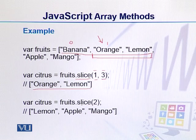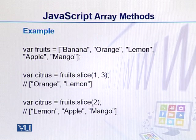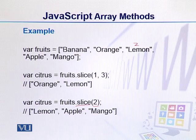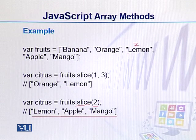If we use the slice function with only one argument - for example, argument two - it will start from the second index. Because we have not given a second argument, it will return all values from that index onwards. So in this case, the result will be lemon, apple, and mango.